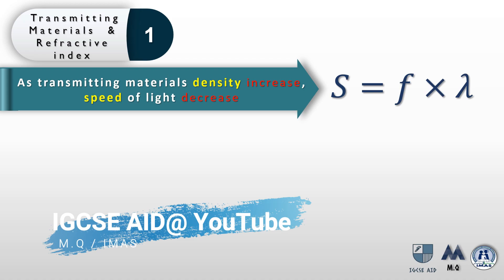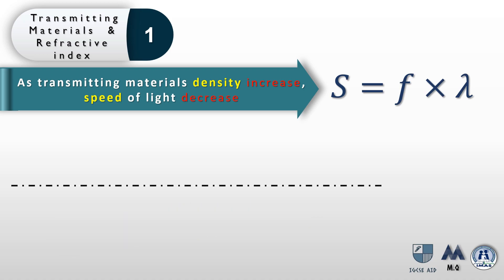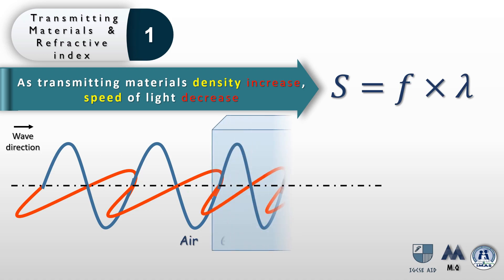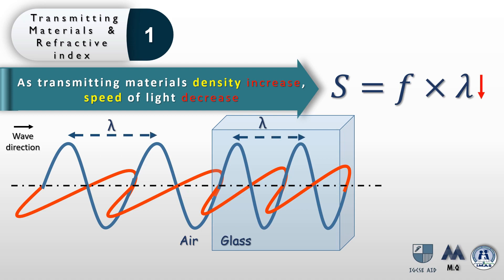The wave speed equation says that the speed of a wave equals the frequency times the wavelength. Light is comprised of an electric field oscillating in a transverse pattern upwards and downwards, and a magnetic field oscillating in a transverse pattern sideways. When this wave passes from one transmitting material to another, such as from air to glass, the wavelength is going to decrease, and as a result the speed is also going to decrease.